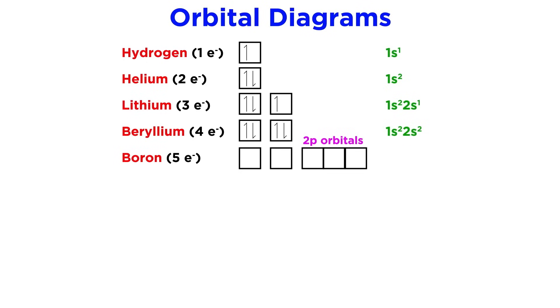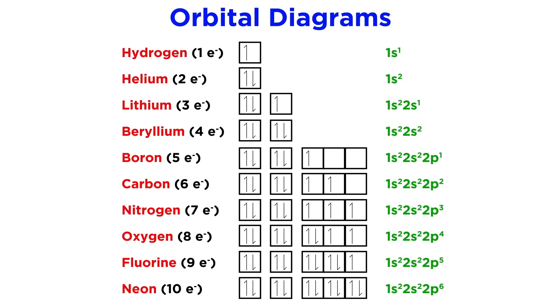Now we enter the 2p subshell, which will be represented by three boxes, since there are three of these orbitals. For the elements from boron to neon, we can see a demonstration of Hund's rule. Once again this rule tells us that for a set of degenerate orbitals, or orbitals of equal energy, like these three 2p orbitals, we must fill them up one at a time before doubling them up. That's why as we add one additional electron per element, we can see them being arranged within the orbitals in this fashion.